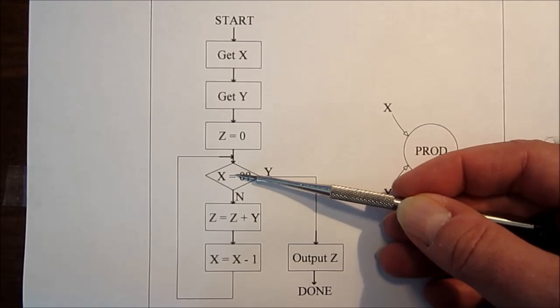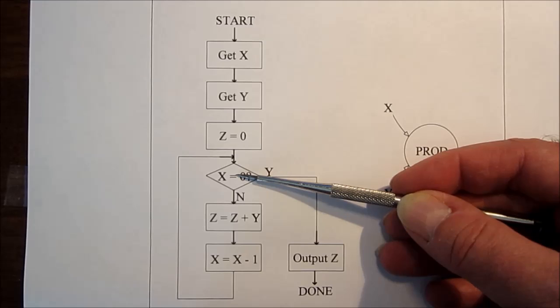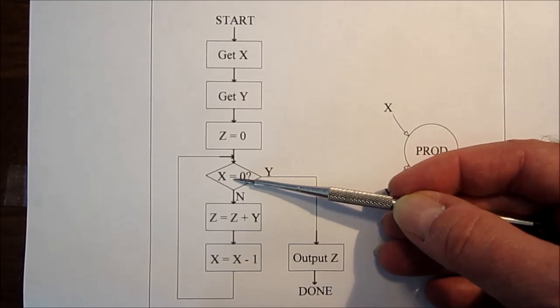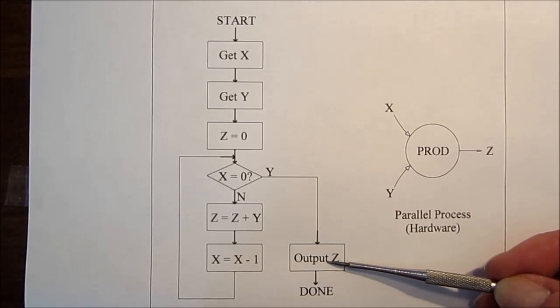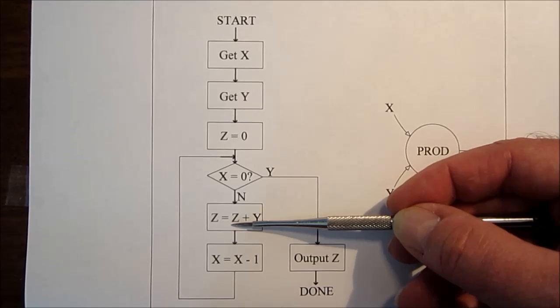Now this decision block right here is a very good example of a sequential process, because it is an if-then-else. If x is equal to zero, then output z, and we're done, else z equals z plus y.